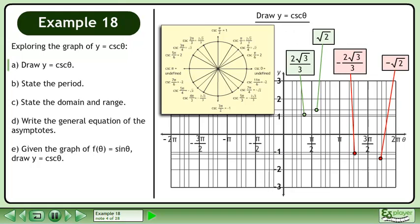As in the previous example, we have lines representing 2√3 over 3, √2, negative 2√3 over 3, and negative √2.